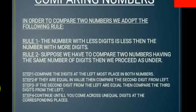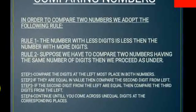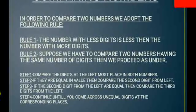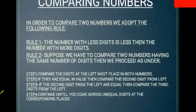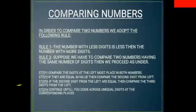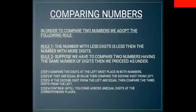If the second digit from the left are equal then we compare the third digit from the left and we continue until we come across unequal digits at the corresponding places. This is how we can compare two numbers.